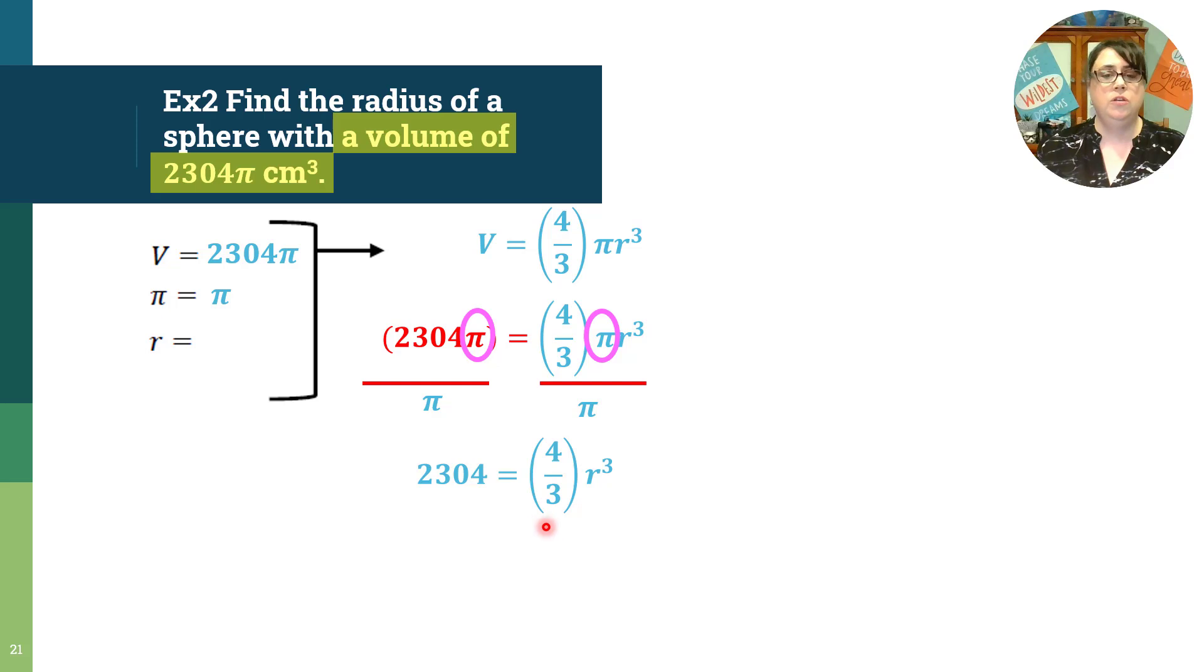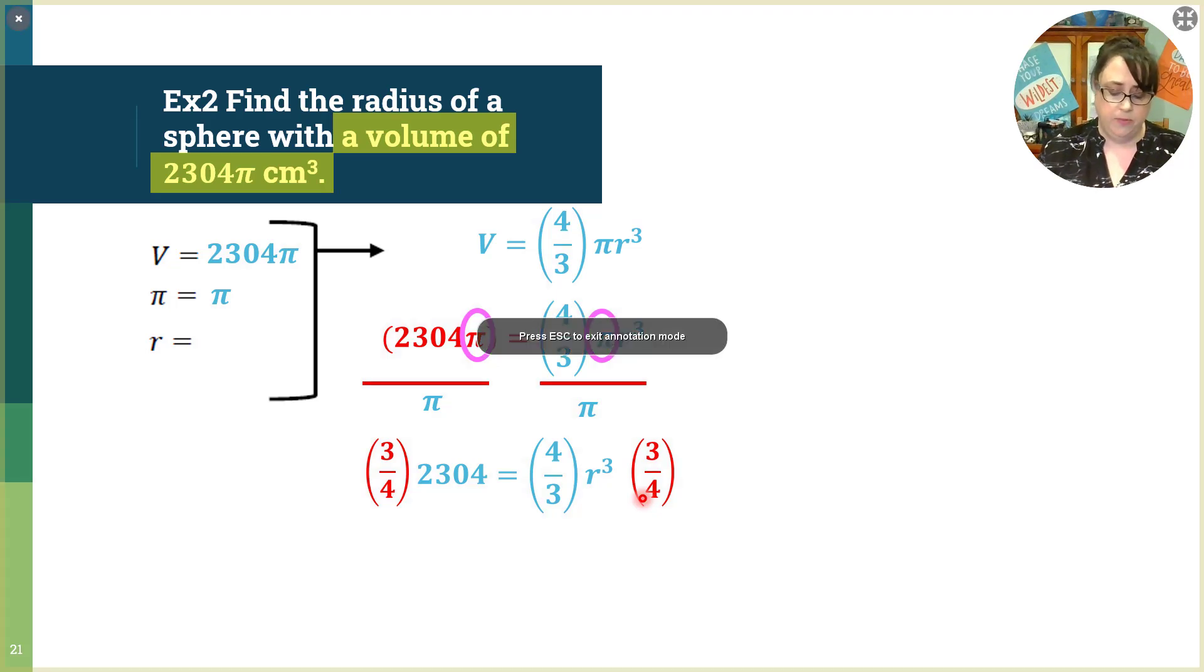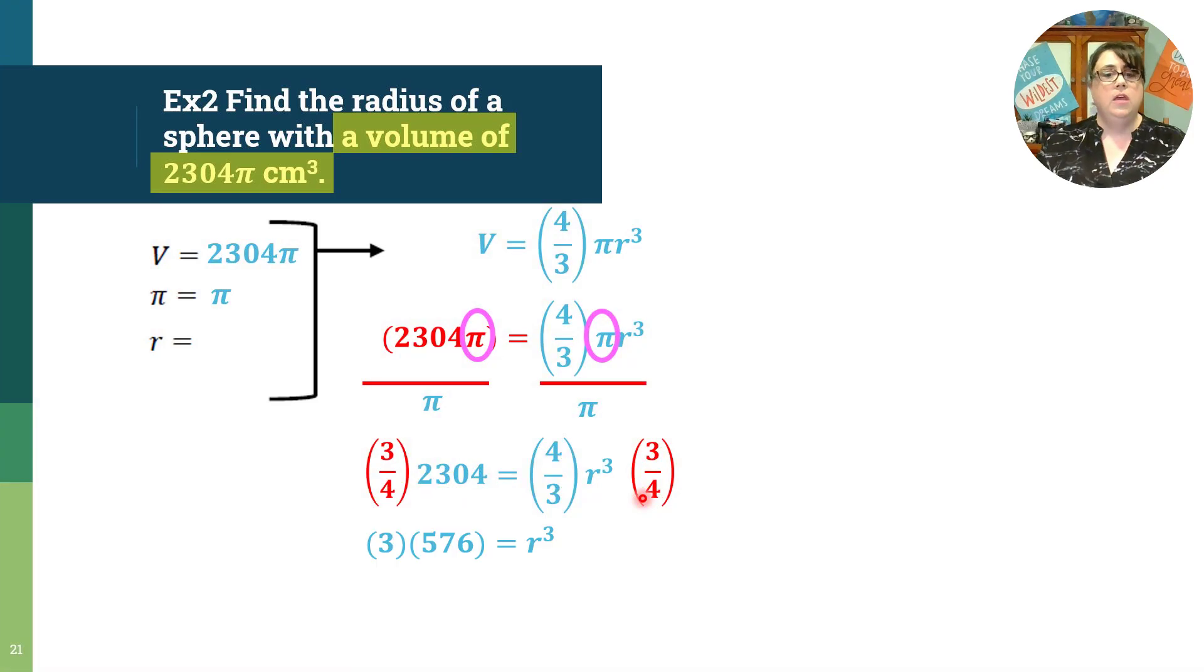How do we undo multiplying by four thirds? You multiply by the reciprocal, three fourths. When we multiply both sides by three fourths, your three and three become one, your four and four become one. Then you have three times 2,304 over four. Four goes into 2,304 five hundred and seventy six times. So now I have three times 576 equals r cubed.